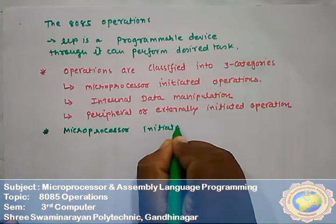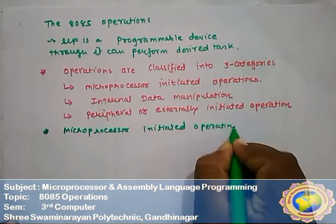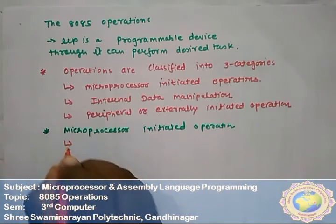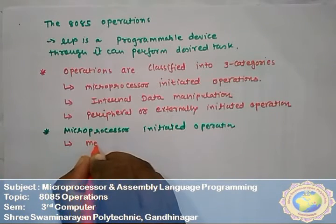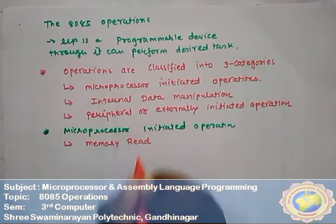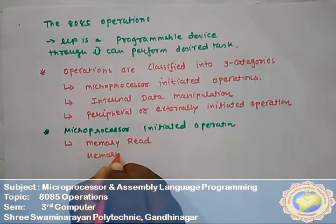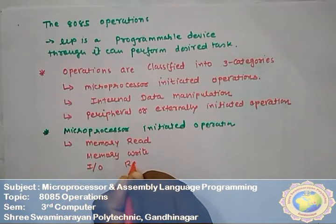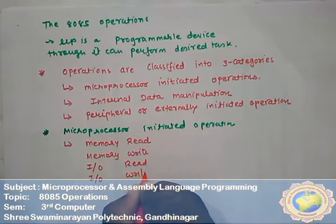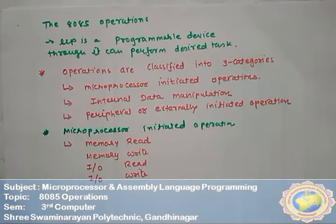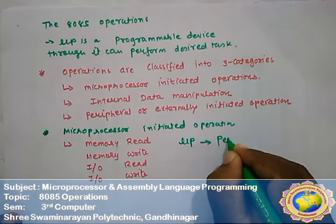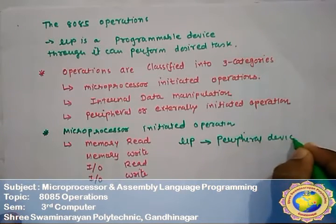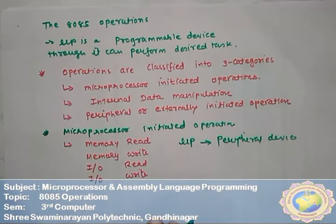In the microprocessor-initiated operation, it performs four primary operations: one, memory read; two, memory write; three, input-output read; four, input-output write. These are known as microprocessor-initiated operations — they represent the communication between the 8085 and the peripheral device.